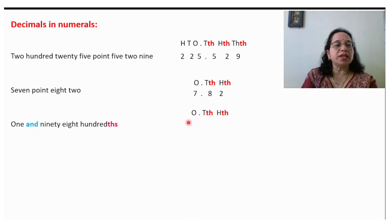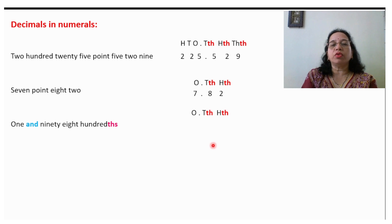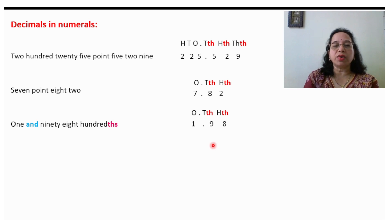One and 98 hundredths: 1 will come in the ones place and 98 hundredths means 9 and 8 will come after the decimal. So the decimal will be 1.98.